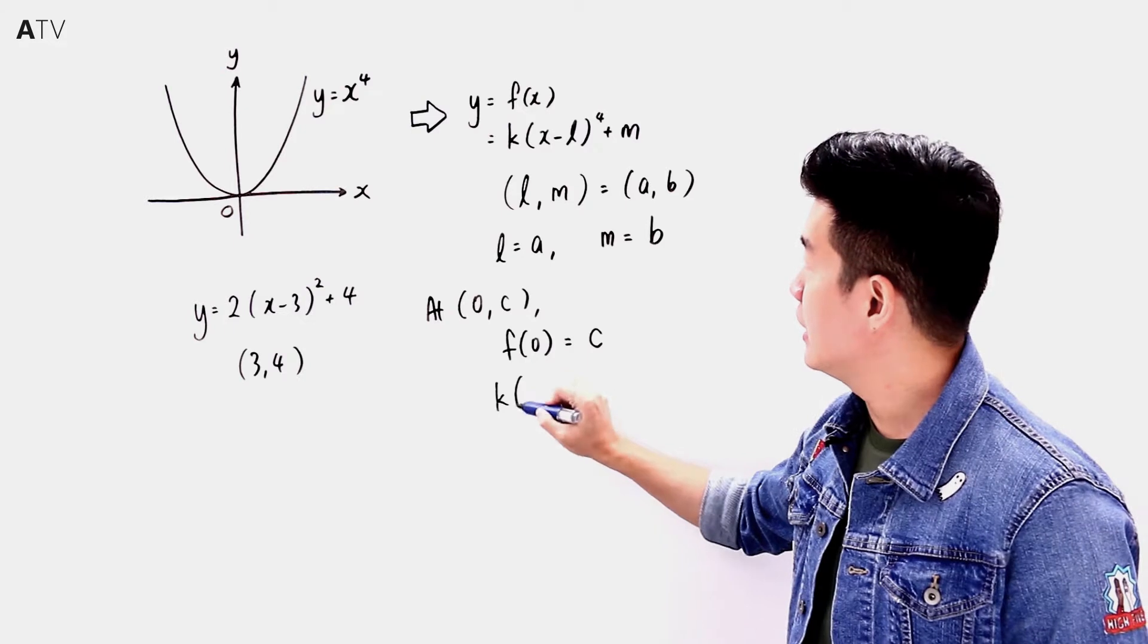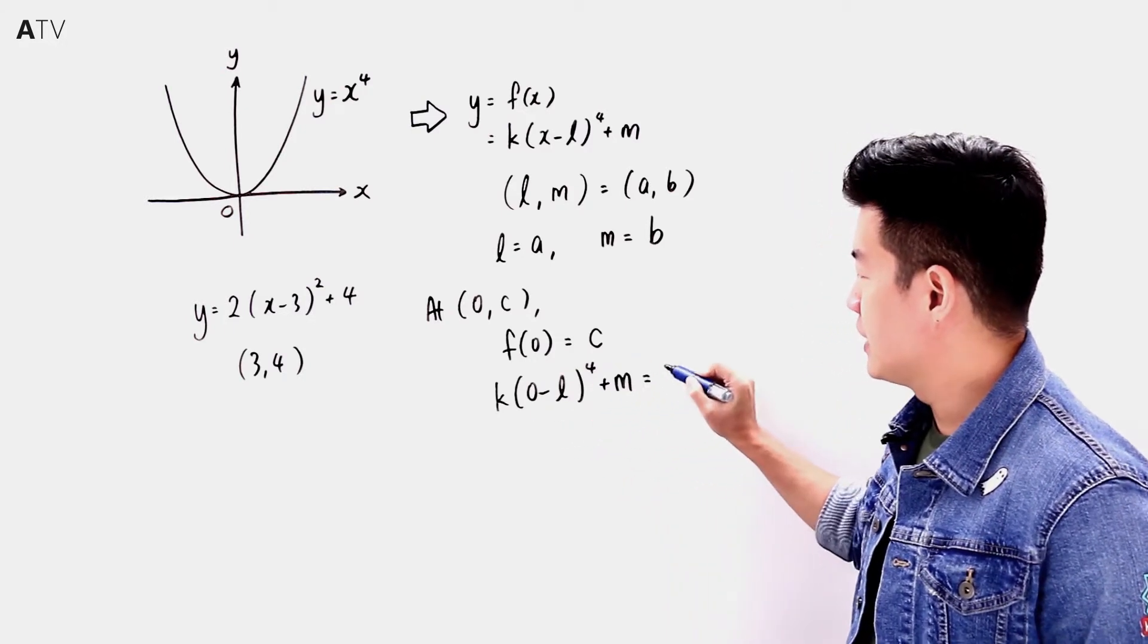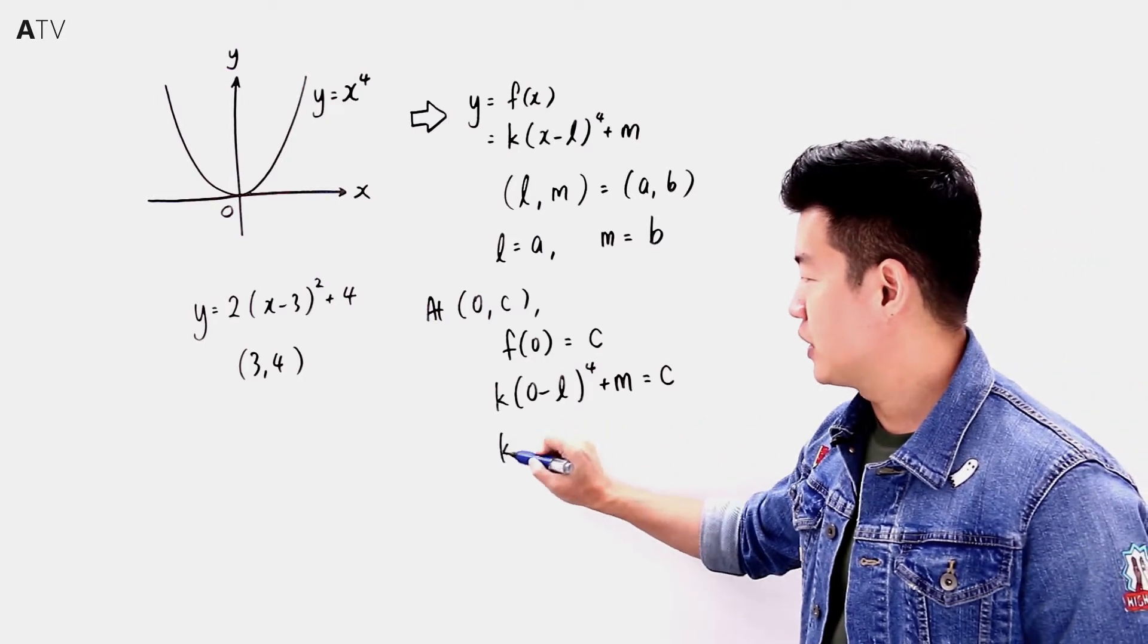So k(0 - l)⁴ + m = c. Therefore, k·l⁴ = c - m.